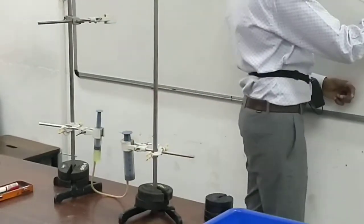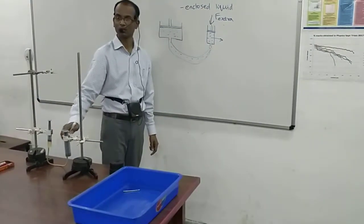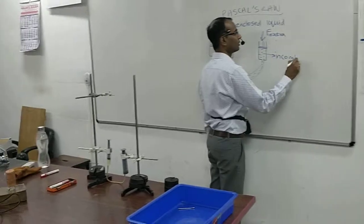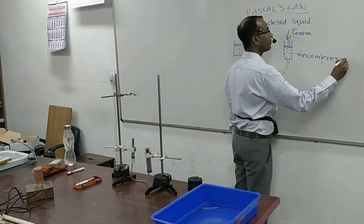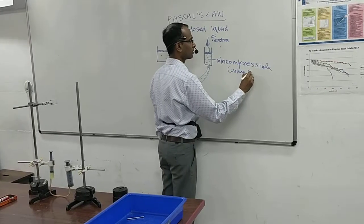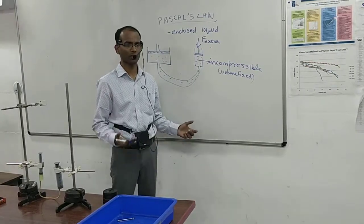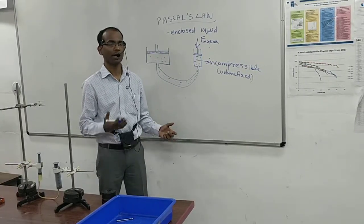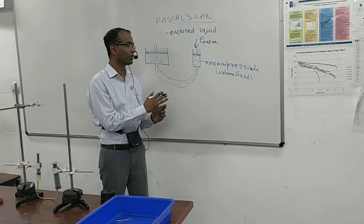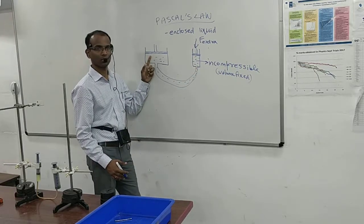The reason this works is that the liquid is incompressible — it cannot be compressed and its volume is fixed. It can be water, oil, or anything, but it must have a fixed volume. Liquids have fixed volume; gases are compressible, not liquids. So if I move this piston down, this liquid has to move up.